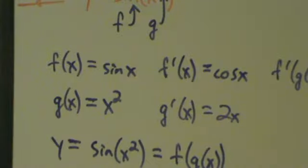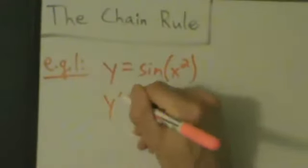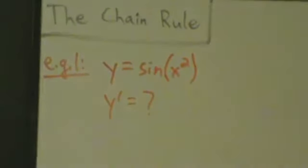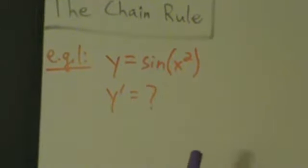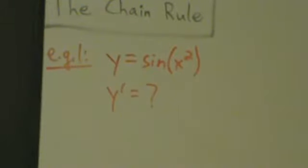Let's talk about this same example in another way. This other way is how we'll pretty much do the rest of the examples. The first method is good for simpler ones, but for more complicated ones it's not as practical. So, same problem: y equals sine of x squared, find y prime. There's only one way to use the chain rule, but there are a few different ways of thinking about it.